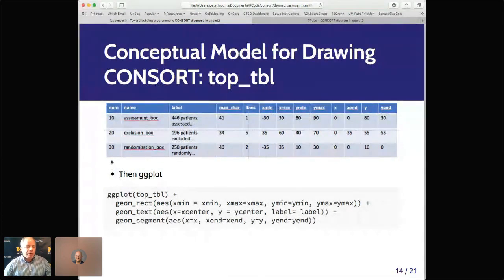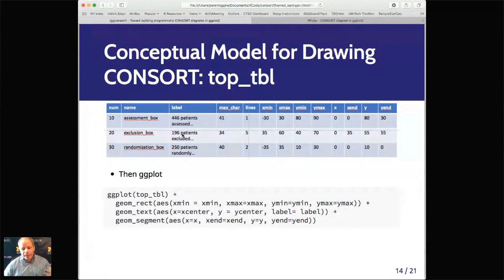So the conceptual model is that you start out, and this is the top table, with three boxes, assessment, exclusion, and randomization. The assessment is essentially you count a number and then glue it to some text. Same with the randomization. Whereas the exclusion box, because there are multiple exclusions, is essentially a mini table that gets collapsed into a single string. But once you have that, you can count the maximum width in characters, the height in the number of lines, and then convert those to the dimensions of the box that you need for x-min, x-max, y-min, and y-max. And then you can do the same for the corresponding arrows, where they need to go with x, x-end, y, y-end. Once you have this table, you can plot the boxes with geomrect, the labels with geomtext, and the arrows with geomsegment in one call.